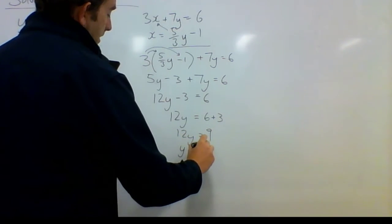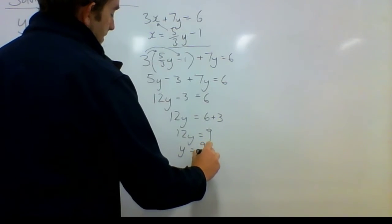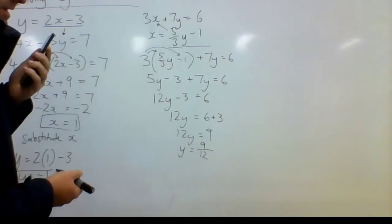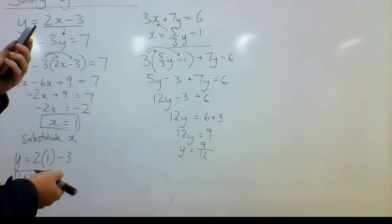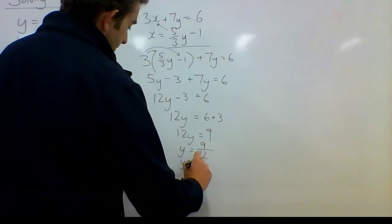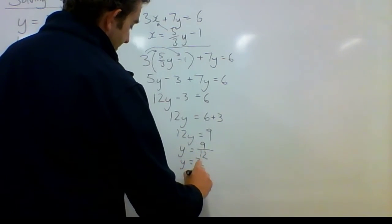So y is going to equal 9 divided by 12. Dividing there because it's 12 times y and the inverse operation is to divide. I can simplify that. Both of those are divisible by 3. So y equals 3 over 4, 3 quarters.